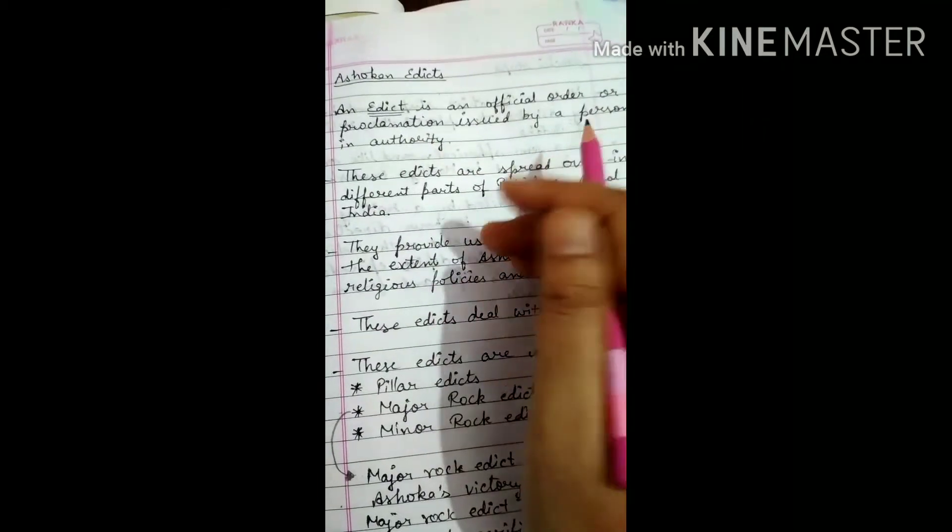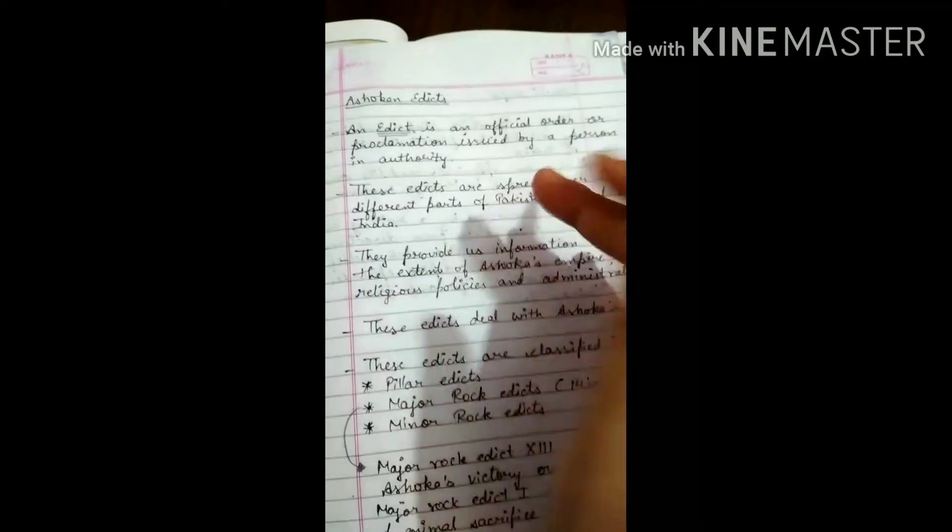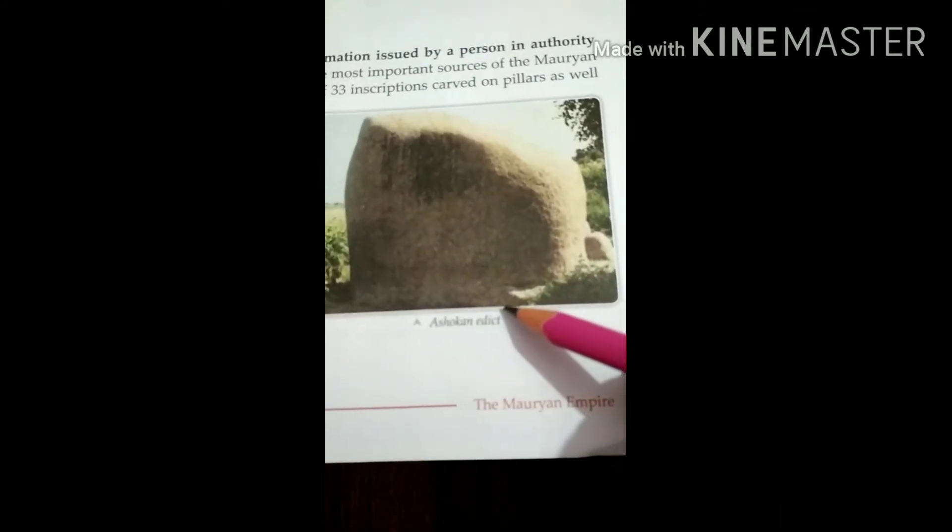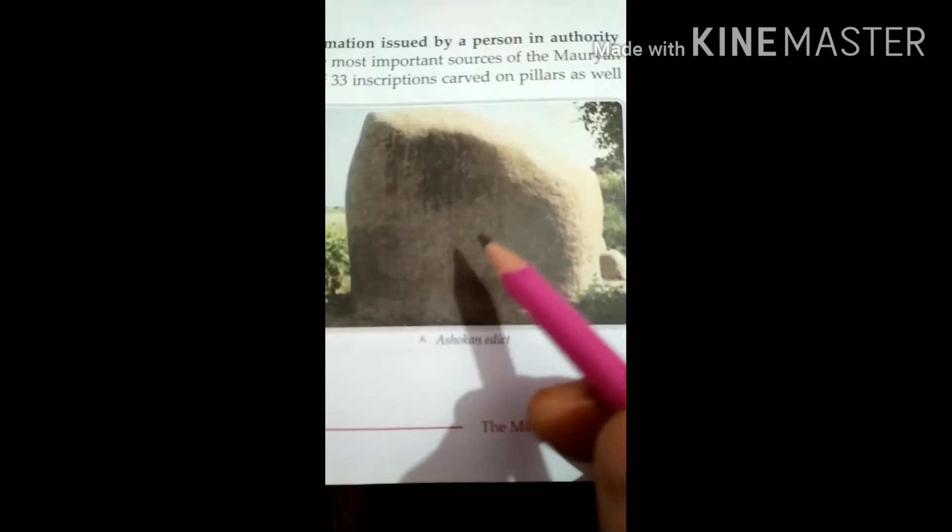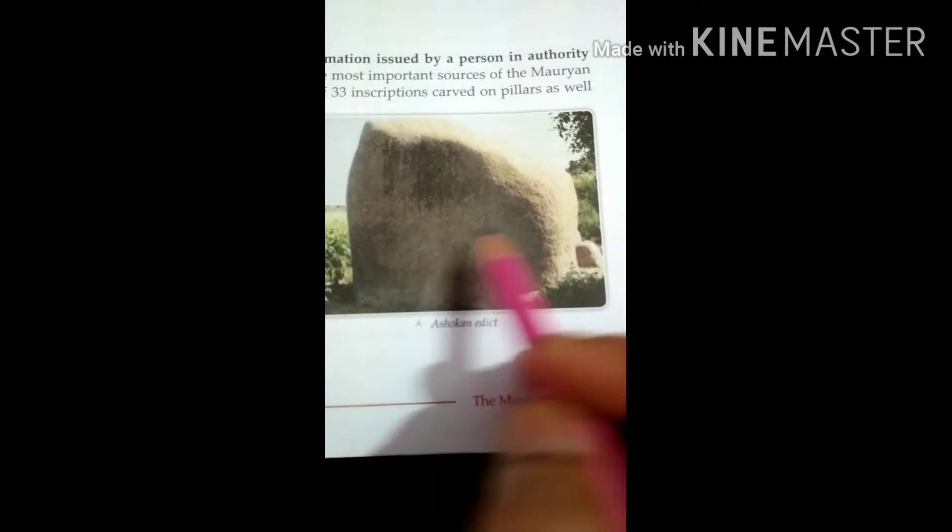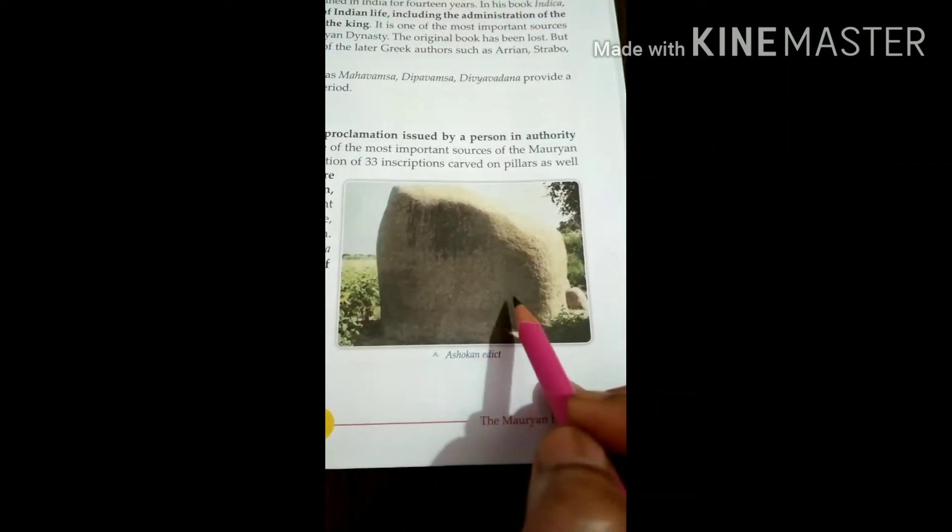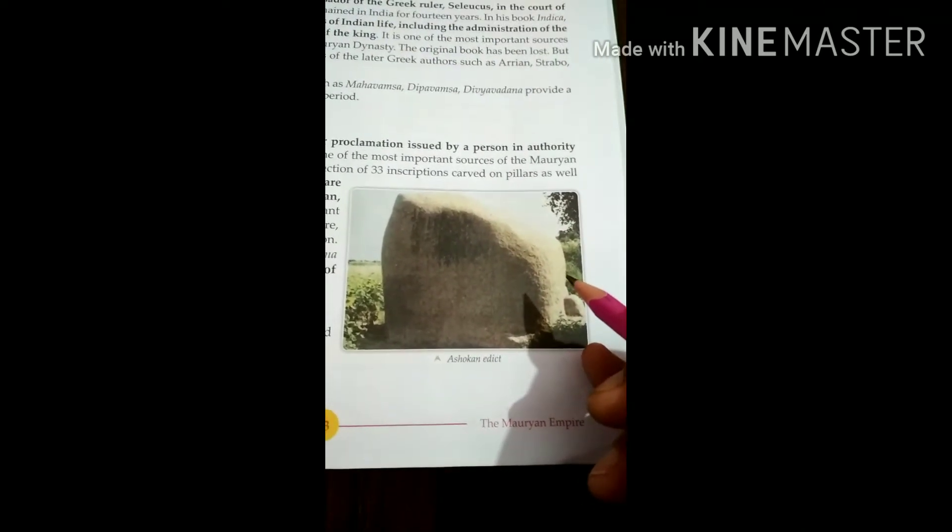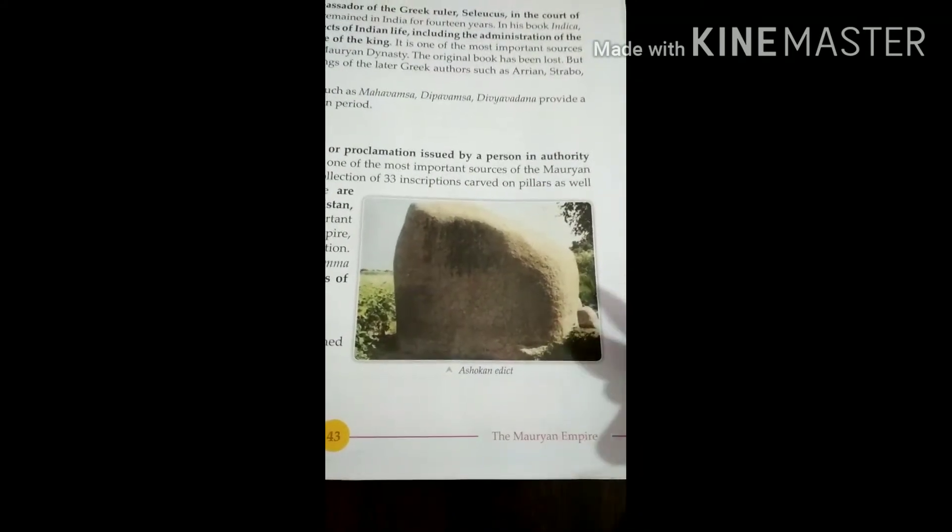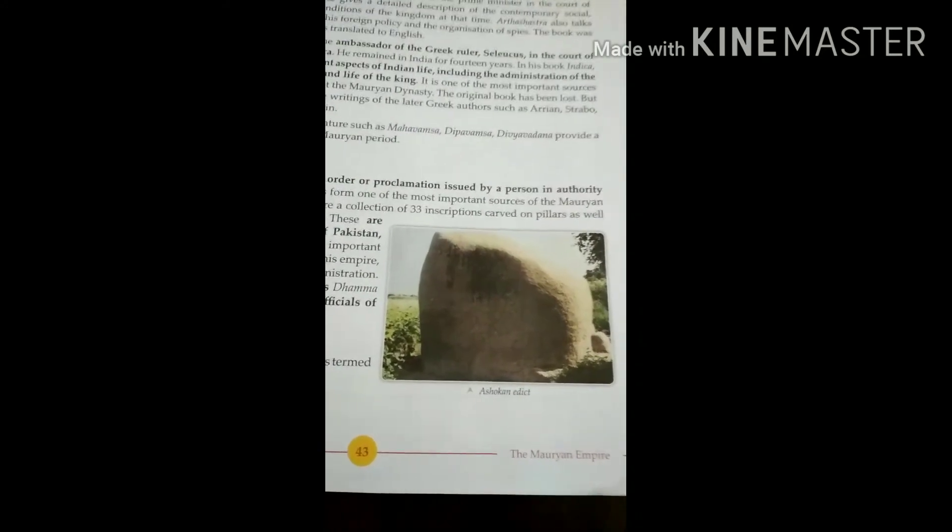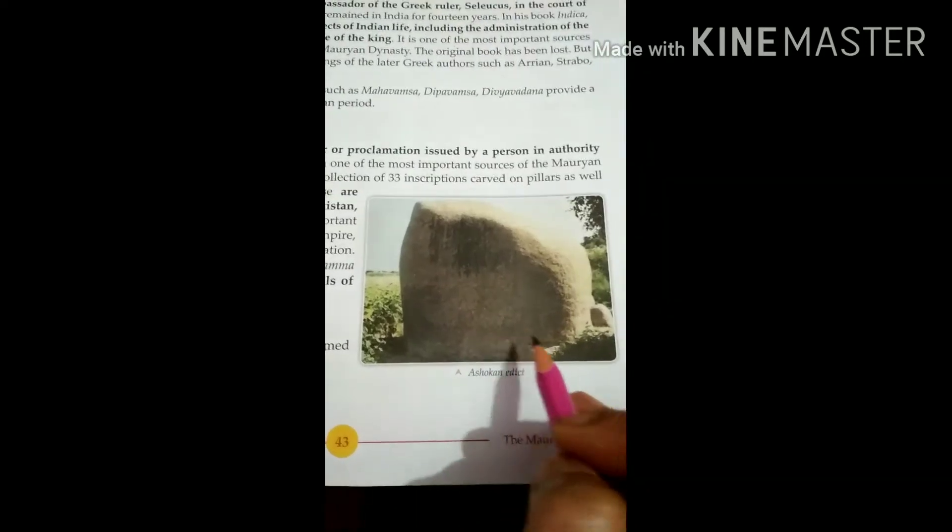The edicts actually were on big stones. There was no paper. So when someone had a message, when the king had a message, these details were engraved on stone pillars and rocks. The details of Ashoka's Dhamma were engraved. After victory in Kalinga War, the rules and regulations and principles were engraved on the pillars. This is what we call Ashoka edicts.